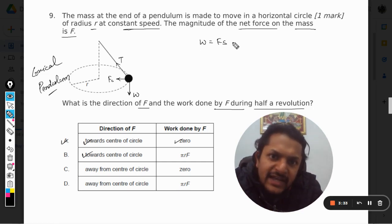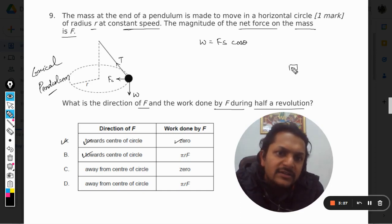Why? Because the formula of work done is F·s·cos(θ), where θ is the angle between the displacement vector and the force vector. This is the F vector, this is the s vector, and this is θ. We use this formula.